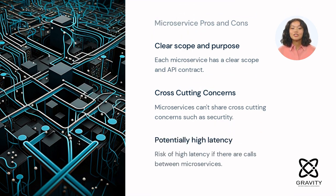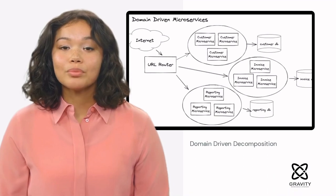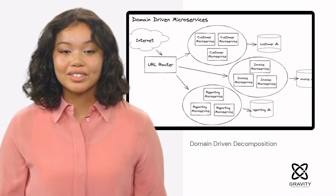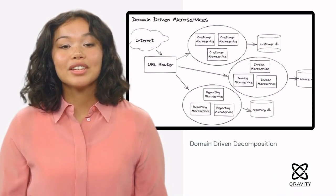Furthermore, there is the risk that an architecture involving deep call chains between related services, due to service dependencies, will result in high latency due to the number of hops and potential outages.